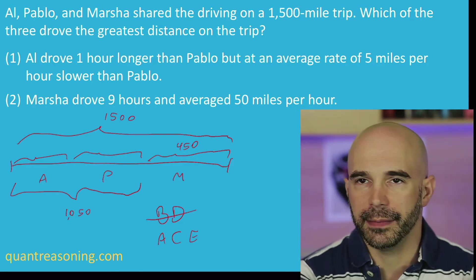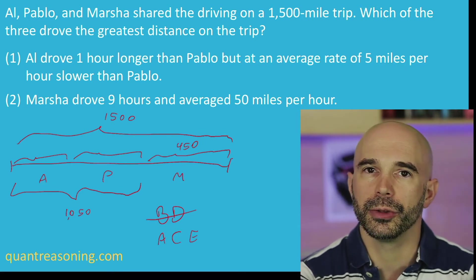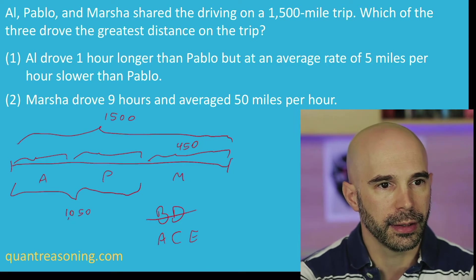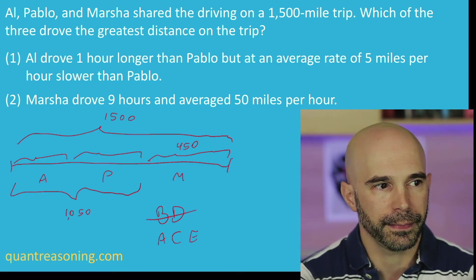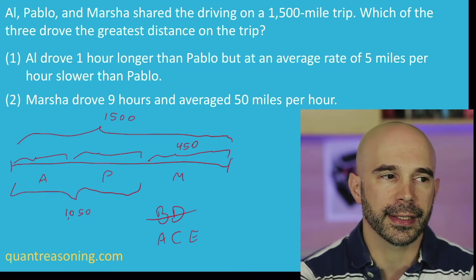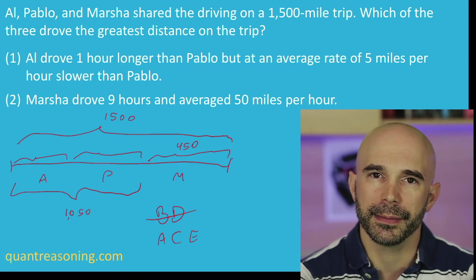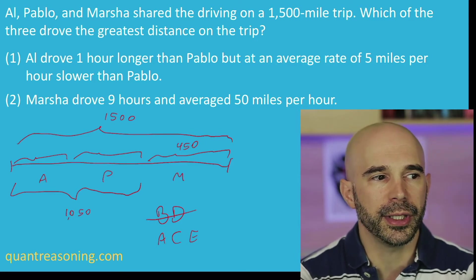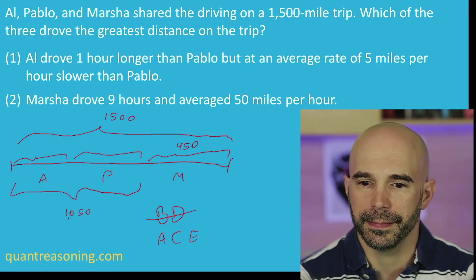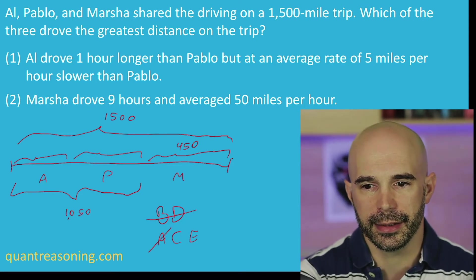Statement one is much harder to evaluate. We know that Al drove longer but slower. Can this statement be sufficient on its own? The answer has to be no, because we don't know anything about Marsha. So with statement one on its own, there's no chance of being able to answer this question. I'm eliminating A as an option.